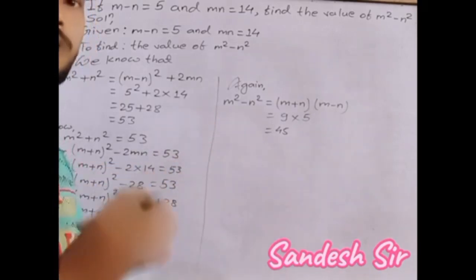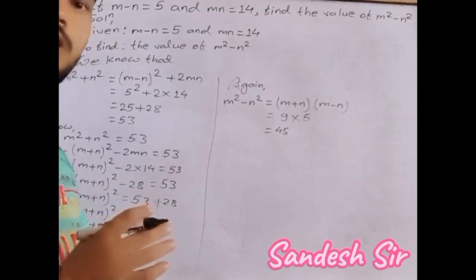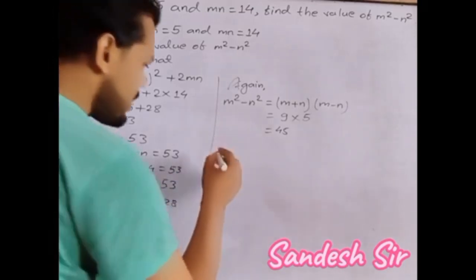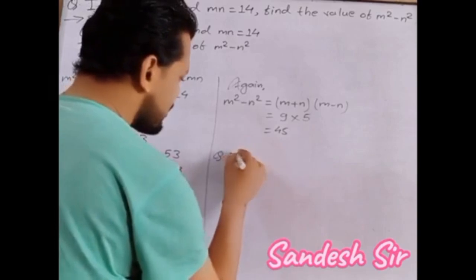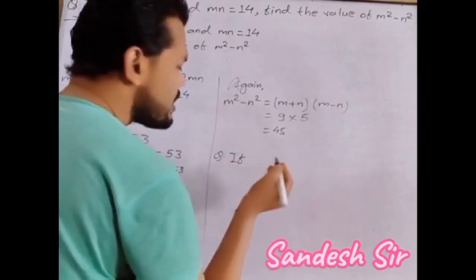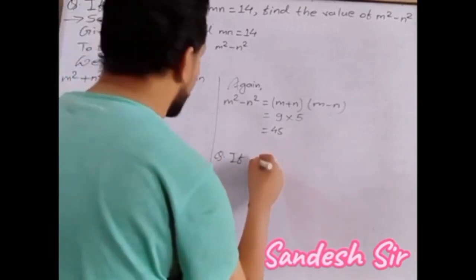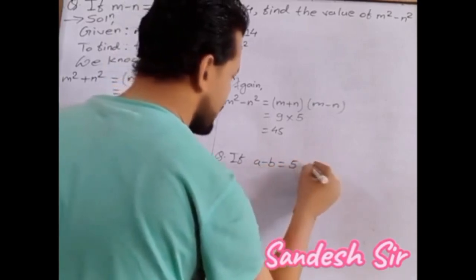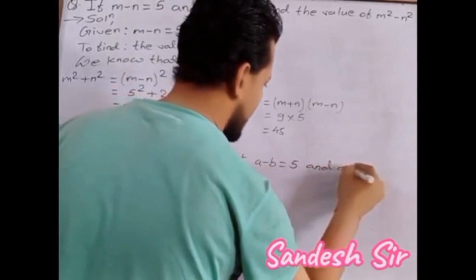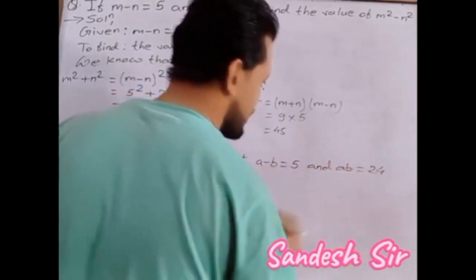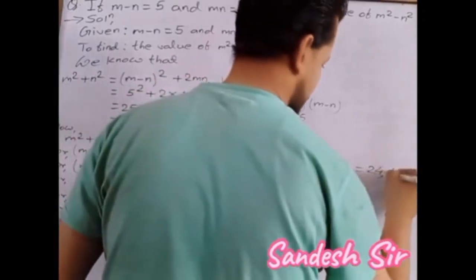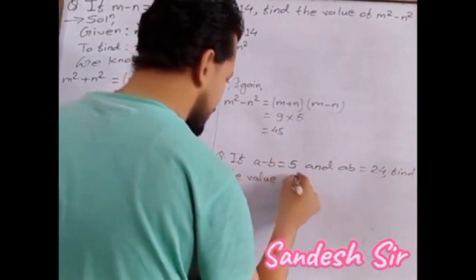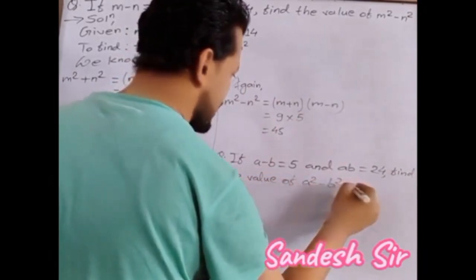If you have any confusion, you can ask in the comment section. Now here is a practice question for you: if a minus b is equal to 5 and ab is equal to 24, find the value of a squared minus b squared. You can solve this question in the comment section.